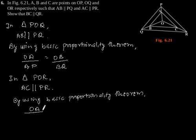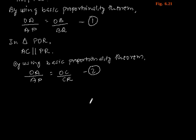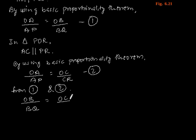OA/AP = OC/CR. Let us say this is equation 1 and this is equation 2. From equation 1 and equation 2, we get OB/BQ = OC/CR.